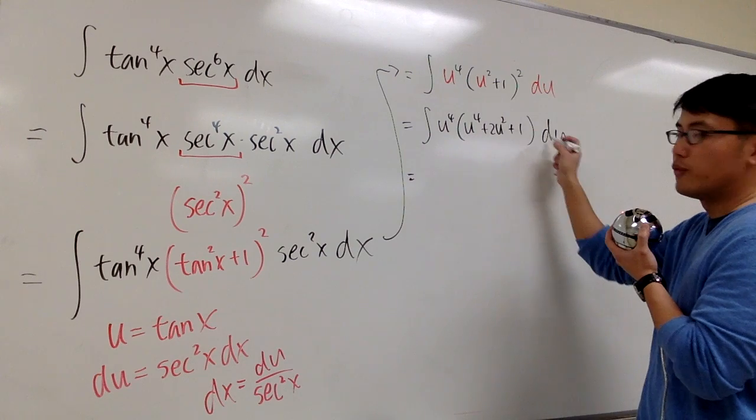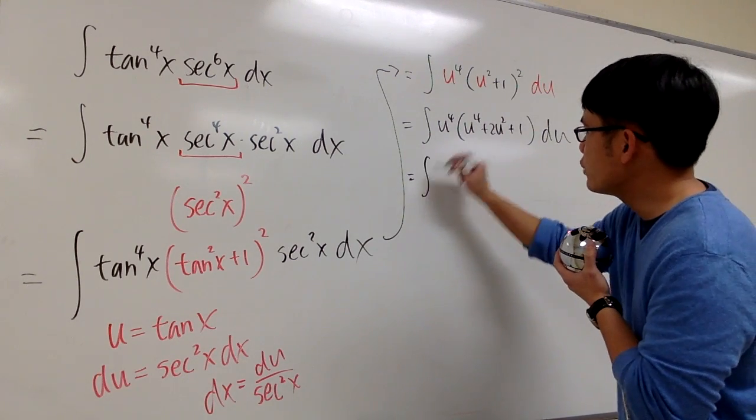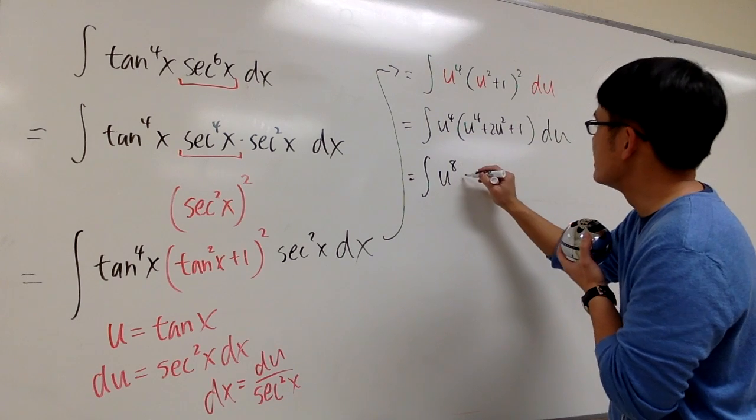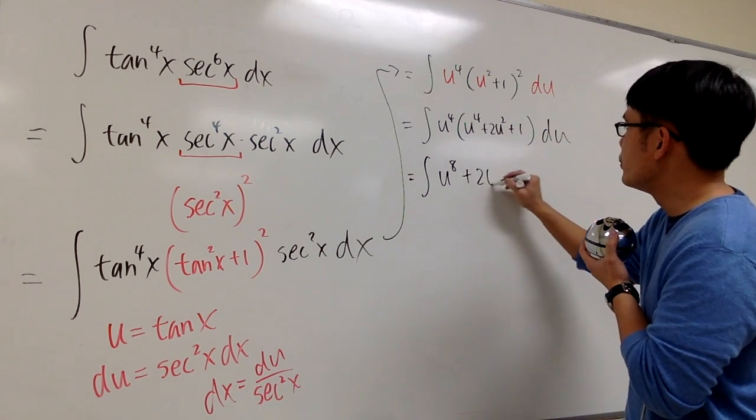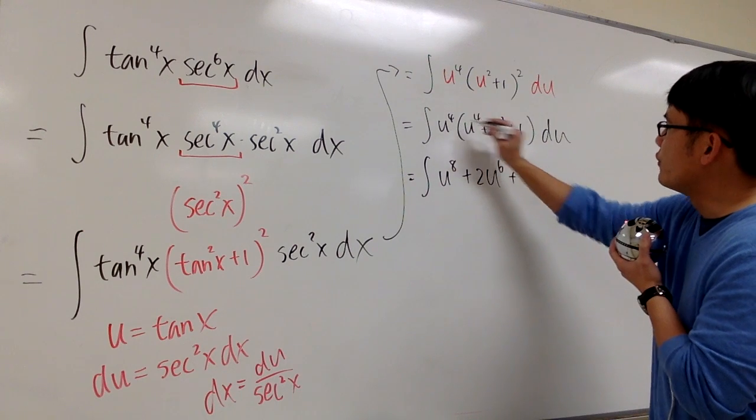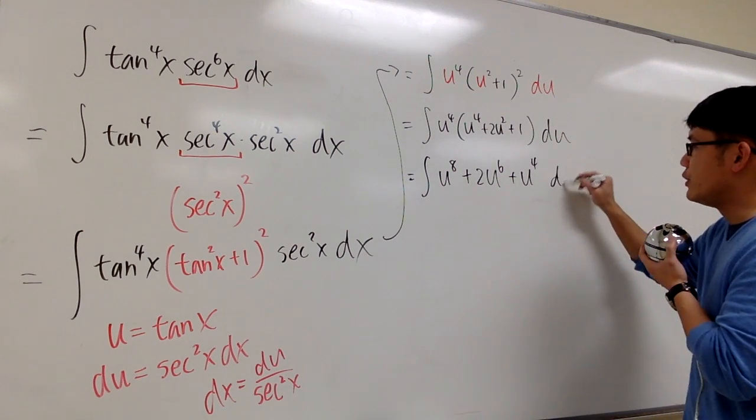And then I will have to distribute the u to the fourth power, so this is the integral of u to the 4 plus 4, which is 8, plus 2u4 plus 2, which is 6, plus u to the 4 times 1, which is u to the 4 du.